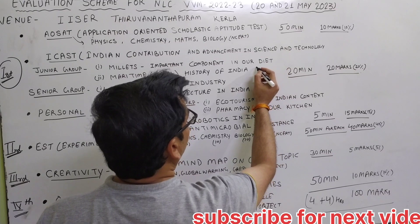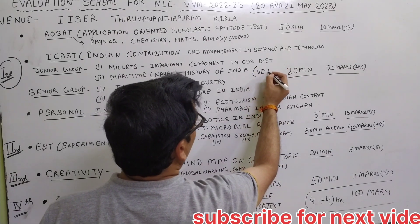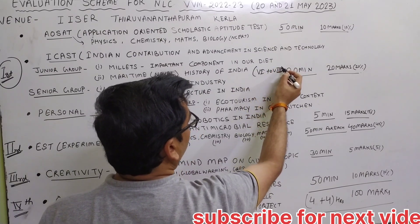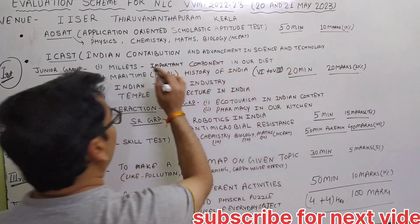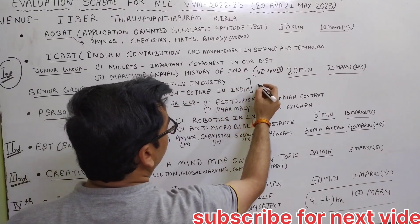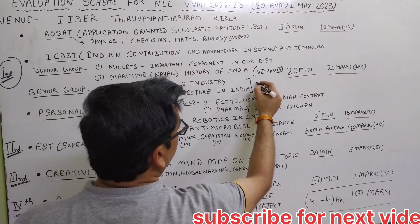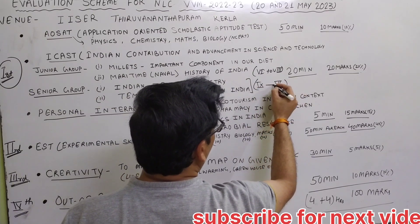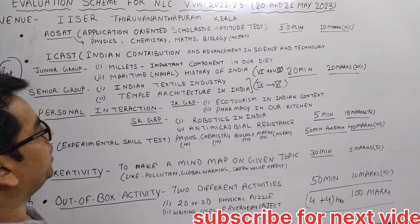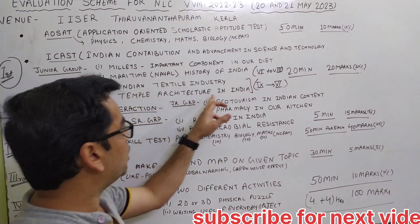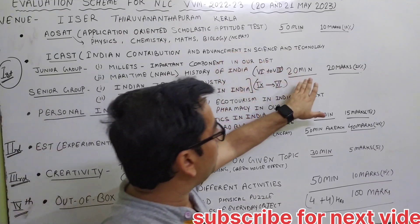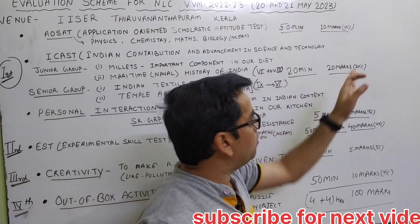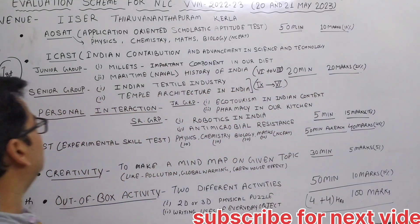For the senior group, the topics are Indian textile industry and temple architecture in India. Senior group here means classes 6 to 8, and for the senior classes that is 9th to 11th, there are also two topics: Indian textile industry and temple architecture in India. A total of 20 minutes is given for ICAST, and it is a copy-pen test carrying 20 marks.